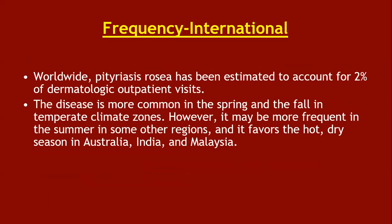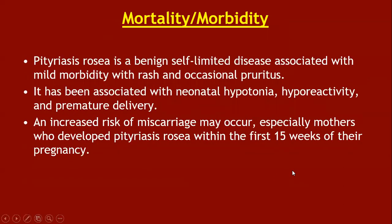Worldwide, pityriasis rosea is estimated to account for 2% of dermatological outpatient visits. The disease is more common in spring and fall in temperate climate zones, but may be more frequent in summer in some regions and favors hot dry seasons in Australia, India, and similar areas. Pityriasis rosea is a benign, self-limiting disease associated with mild morbidity and occasional pruritus. It has been associated with neonatal hypotonia, hyporeactivity, and premature delivery, and an increased risk of miscarriage can occur, especially in mothers who develop pityriasis rosea within the first 15 weeks of pregnancy.